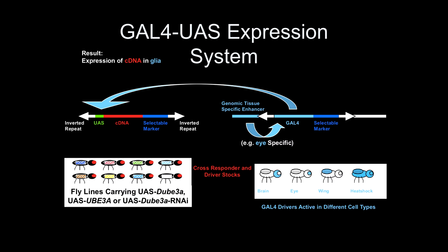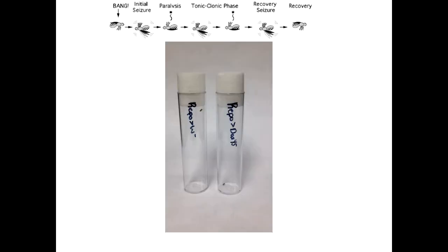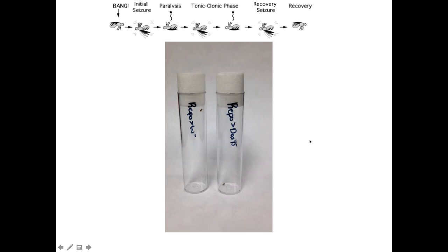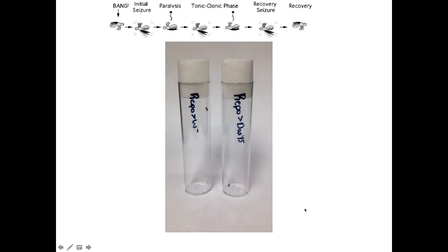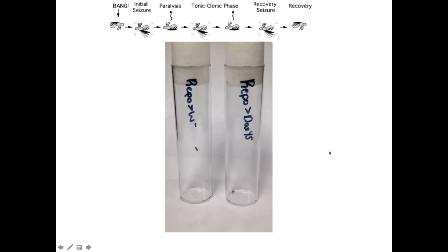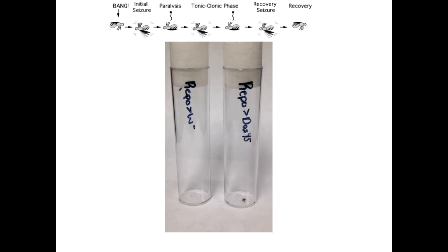There are several glial drivers. The main one I'll discuss is called RepoGAL4, which expresses in all glial cells in the adult and developing fly. The flies on the left are RepoGAL4 crossed to wild-type — they should have no effect. The flies on the right are RepoGAL4 driving wild-type Drosophila UBE3A. After vortexing, if you watch the fly on the right, you see motion — it's having a little seizure, then it's paralyzed again, then has another seizure, and at the end of the video starts to crawl away. The fly on the left is fine already, completely unaffected.